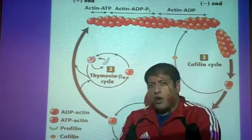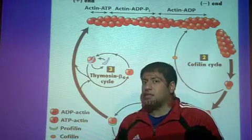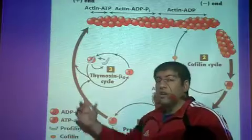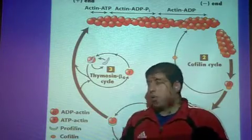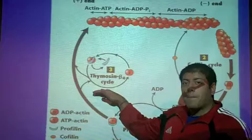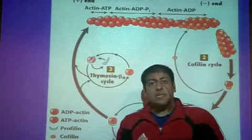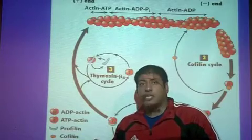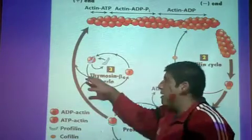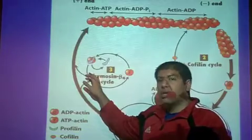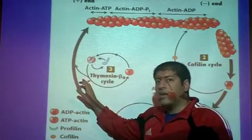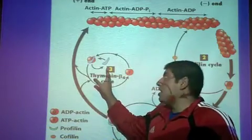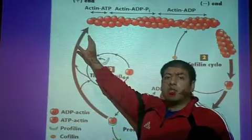A way to regulate and prevent spontaneous addition of a G-actin to the plus end of the filament is another protein called thymosin beta-4. Thymosin beta-4 will bind to G-actins that have ATP bound to them and basically just temporarily sequesters or holds on to that G-actin, then regulates when that G-actin with ATP can go ahead and bind to the plus end.